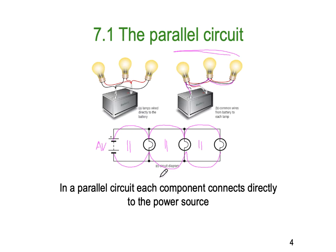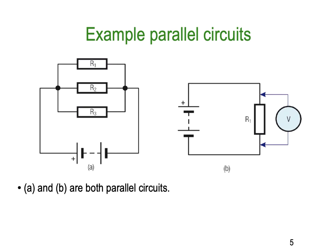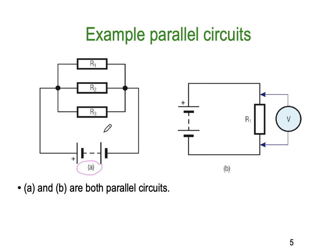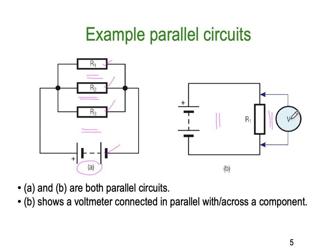In a parallel circuit, each component connects directly to the power source. Here are some examples: in the first circuit we have a battery connected in parallel with three resistors — one, two, three, four components in parallel. On the right-hand side we have a resistor in parallel with a voltmeter, because voltmeters are always connected in parallel, and all of that is in parallel with the supply.